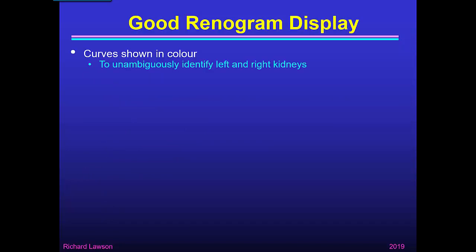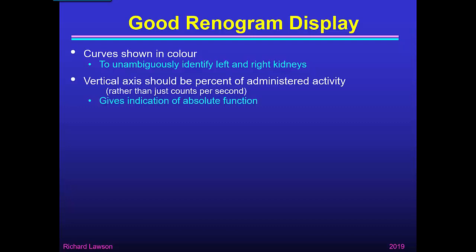For good renogram display, curves should be shown in colour. That's important to unambiguously identify left and right kidneys, which is vital for correct reporting. If you took part in the quiz in part two, you will appreciate that the vertical axis should be percentage of administered activity, not just counts per second, because that gives an indication of absolute function. The questions in the quiz clearly showed that if you just display counts per second, you have no idea whether the overall function of a kidney is good or bad.